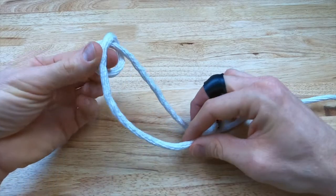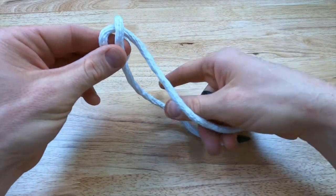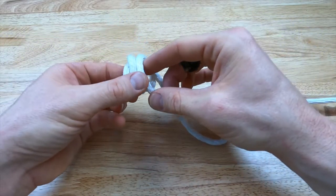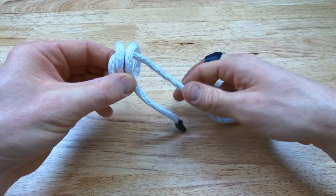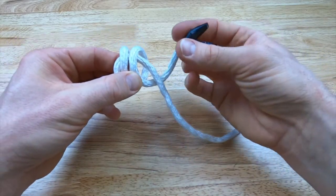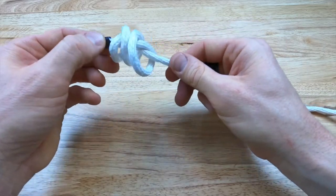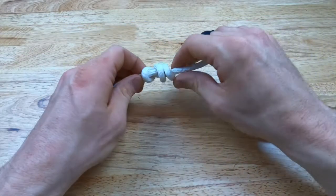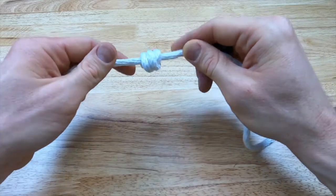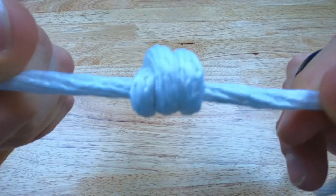Start by making the normal barrel knot, and just add a second loop to it. So pinch all three loops and take the running end and go through the loops. Pull tight. Make sure that the knot is dressed right and you've got a nice double barrel knot there.